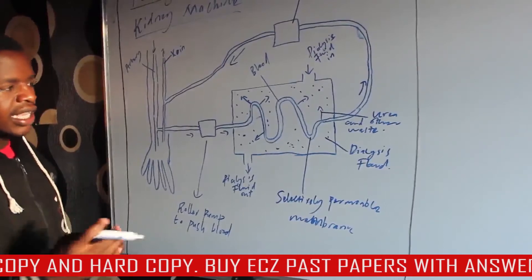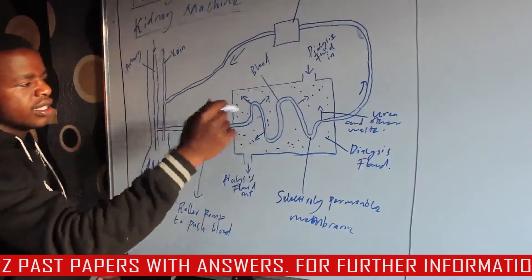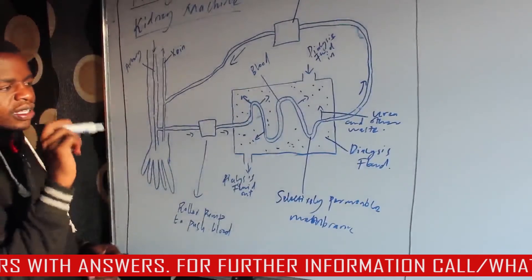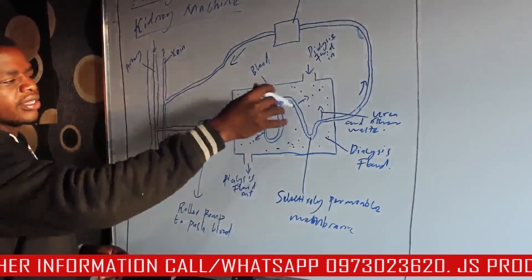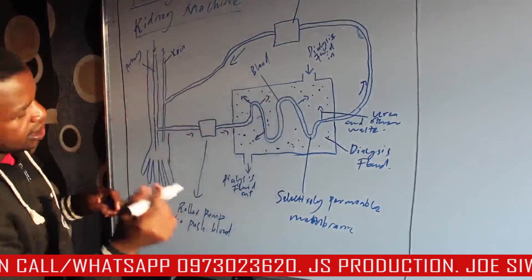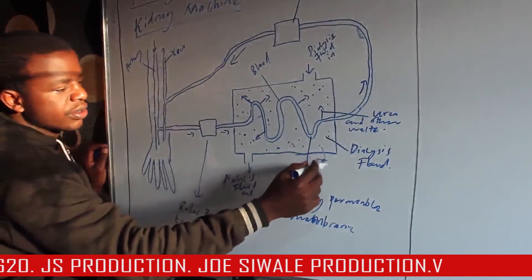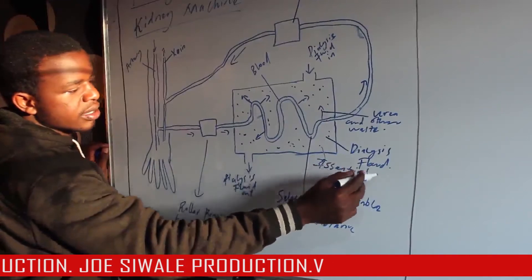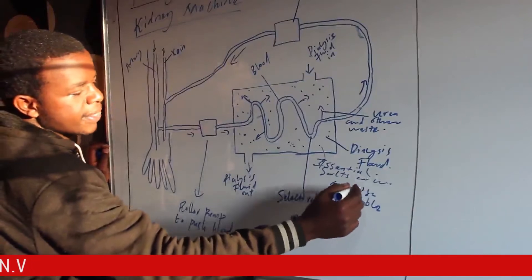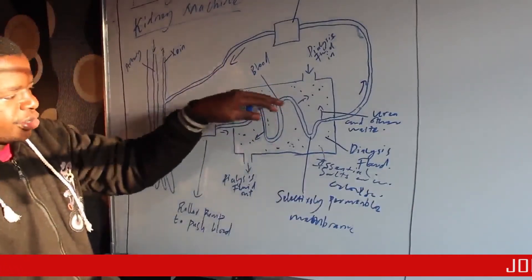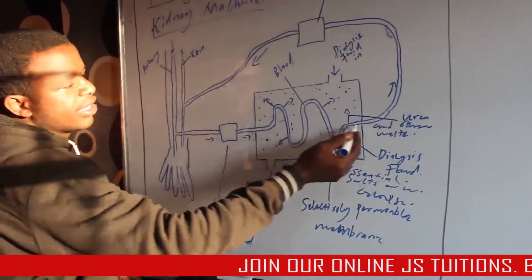A common exam question asks why the tube inside the machine is coiled and cold — the reason is that blood needs to slow down so that most of the urea can diffuse out into the dialysis fluid. Inside the dialysis fluid you will find essential salts, water, and glucose, meaning these substances cannot diffuse from the tube into the dialysis fluid.